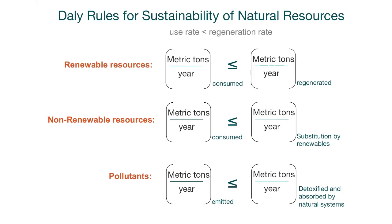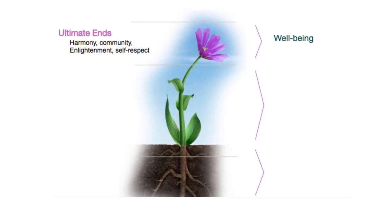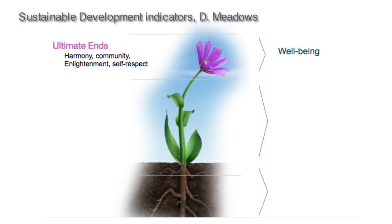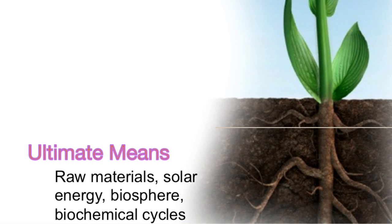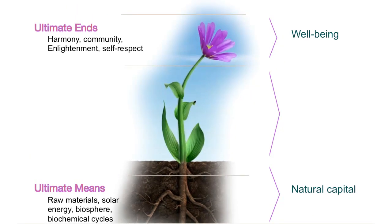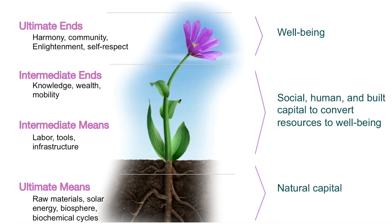As you can see, these daily rules for sustainability of natural resources focus on the rates at which they affect us. The ultimate means, depicted here as the roots, would be raw materials, solar energy, the biosphere, and biochemical cycles. This constitutes our ultimate natural capital. In between the ultimate means and ultimate ends are intermediate means and ends.